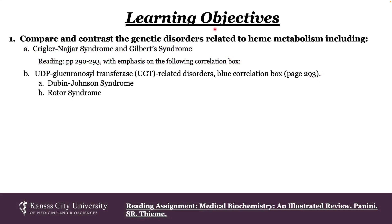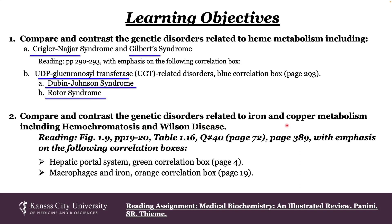Here are your learning objectives. We're going to compare and contrast the genetic disorders related to heme metabolism, to include Krigler-Nyar and Gilbert's syndromes. We're also going to examine UDP-glucuronosyl transferase related disorders, including Dubin-Johnson and Rotor's syndrome. Moreover, we're going to compare and contrast the genetic disorders related to iron and copper metabolism, including hemochromatosis and Wilson disease.